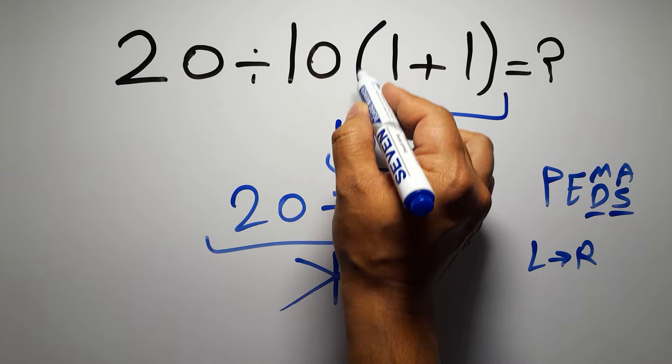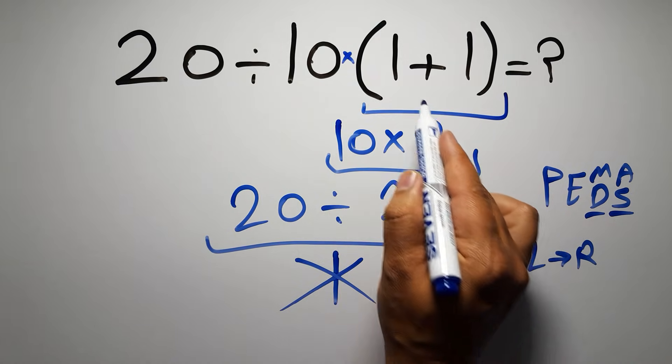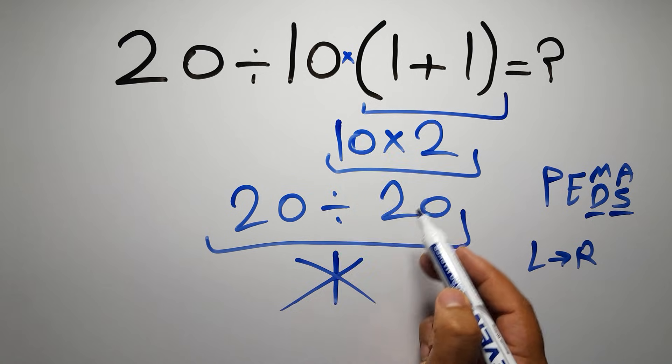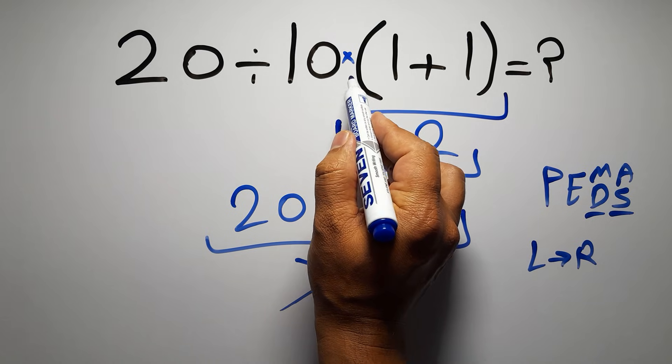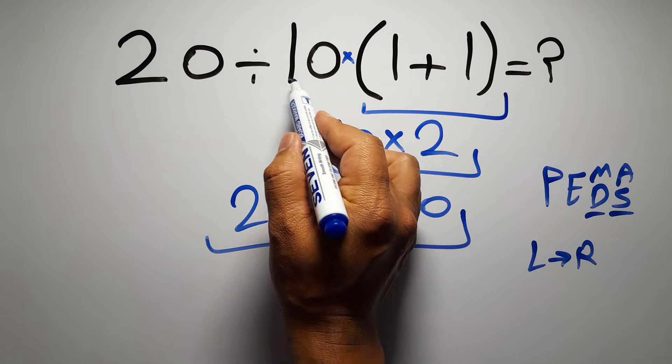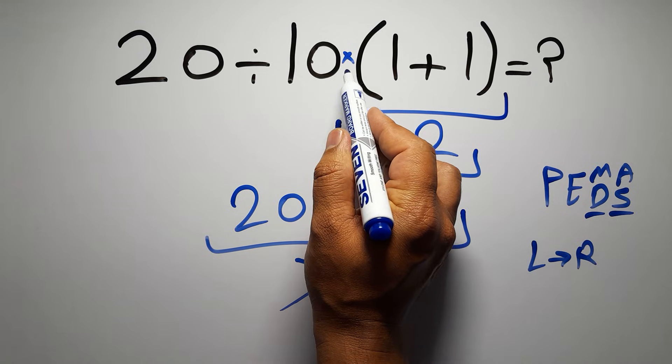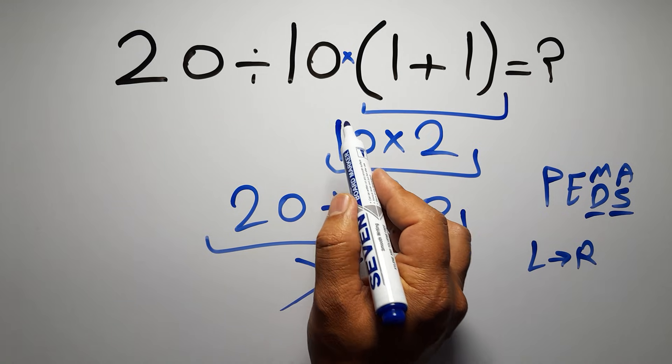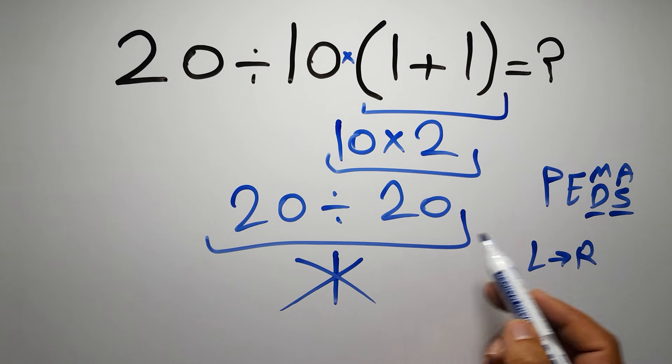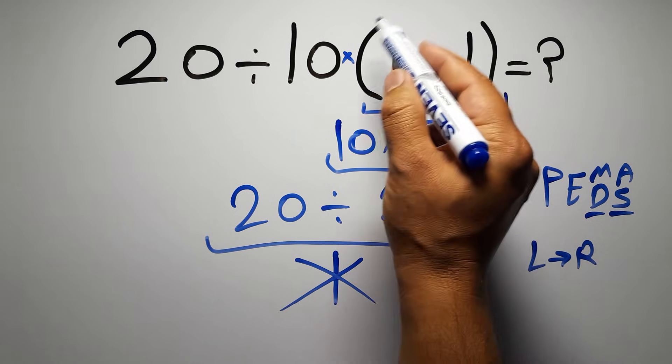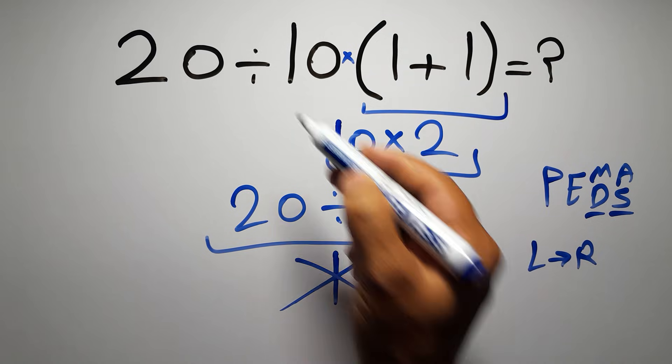In this expression we have one division, one multiplication, and one parentheses. Inside this parentheses we have one addition. Here we have a multiplication because in mathematics when a number is placed next to parentheses it means multiplication, and we usually don't write the multiplication sign for brevity.